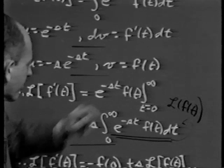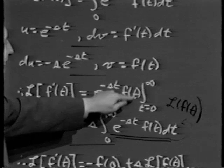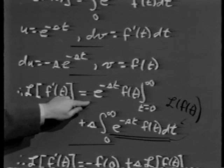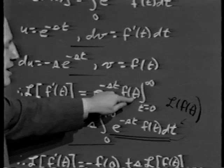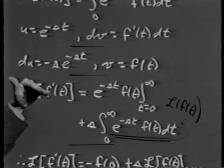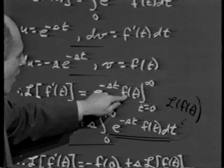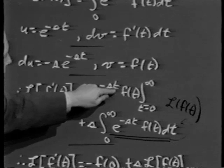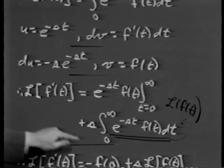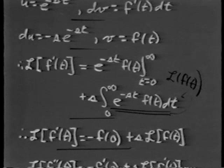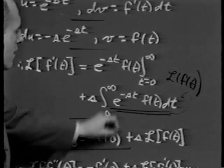Because the Laplace transform of f of t is assumed to exist, the integral from 0 to infinity is finite, which means the integrand must go to 0 at infinity. So the upper limit gives 0. The lower limit — plugging in t equals 0 — gives e to the 0 times f of 0, which is f of 0. Since we subtract the lower limit, the boundary term is minus f of 0. Therefore, the Laplace transform of f prime of t equals minus f of 0 plus s times L of f of t.